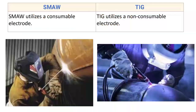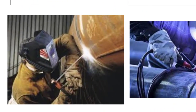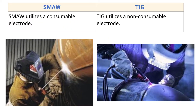The very first difference: SMAW utilizes a consumable electrode. Here you can see the shielded metal arc welding process, where the electric arc is generated between a consumable electrode and the base metal. The electrode will become a part of the weld deposition. Hence, SMAW utilizes a consumable electrode.